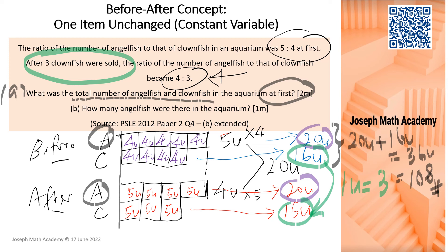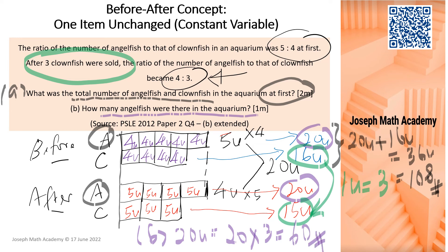To do Part B — extended by me — how many angelfish were there in the aquarium? As discussed, the angelfish before and after should be the same because it's the item that is constant and unchanged. Looking at the model, angelfish before and angelfish after are both 20 units. Since 1 unit is 3, 20 times 3 gives 60. There were 60 angelfish in the aquarium, whether it's before or after. This question is now completed using the model method.